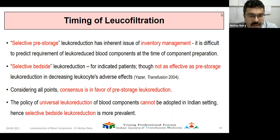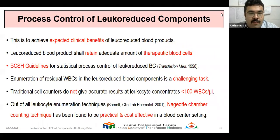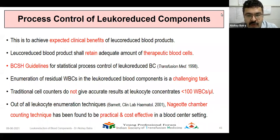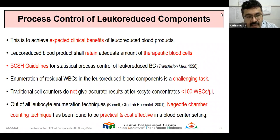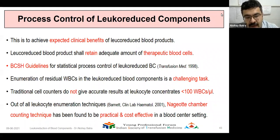Process control of leukoreduced components is an important issue to achieve the expected clinical benefits. After leukoreduction, blood products shall retain adequate amounts of therapeutic blood cells. The BCSH guidelines for statistical process control of leukoreduced blood components are published in Transfusion Medicine 1998. Enumeration of residual WBCs in leukoreduced blood components is a challenging task — automated cell counters do not give accurate results when the count is less than 100. The most practical method for enumeration of leukocytes in a blood center setting is the Nageotte counting chamber technique.